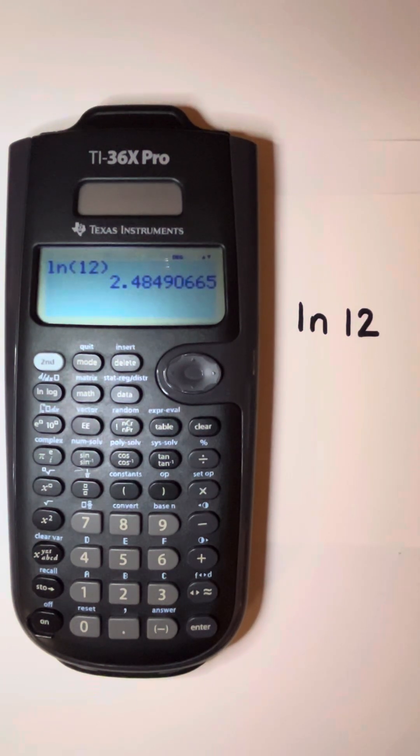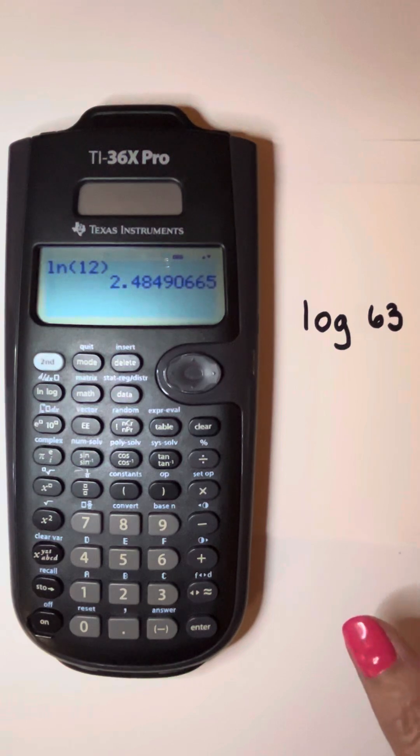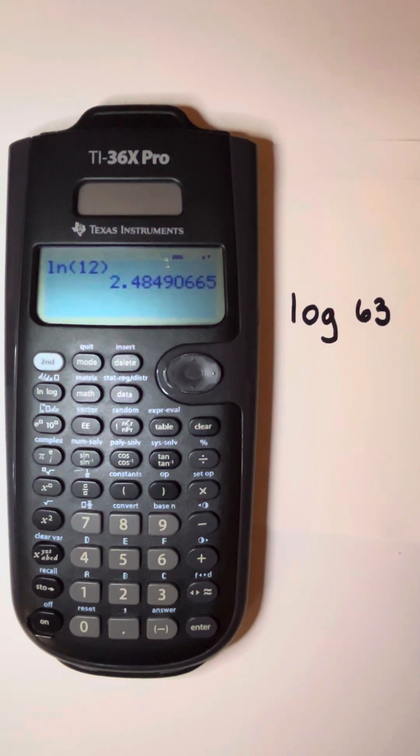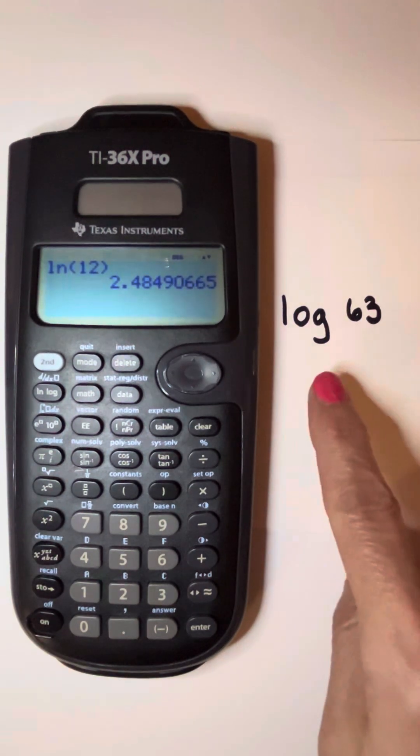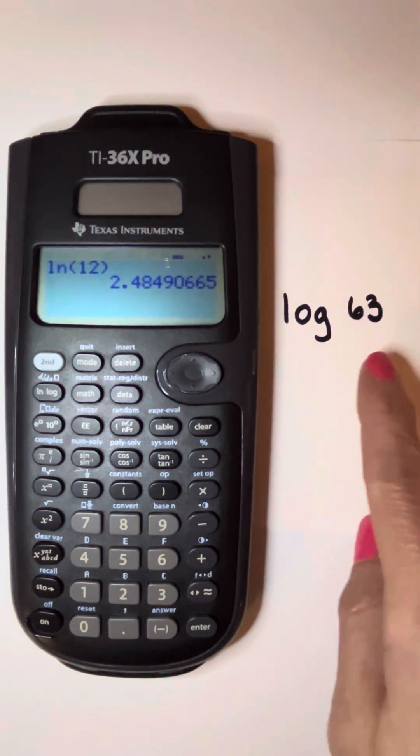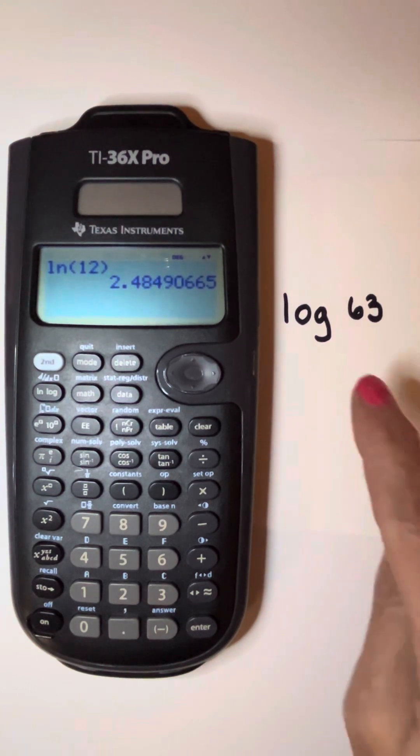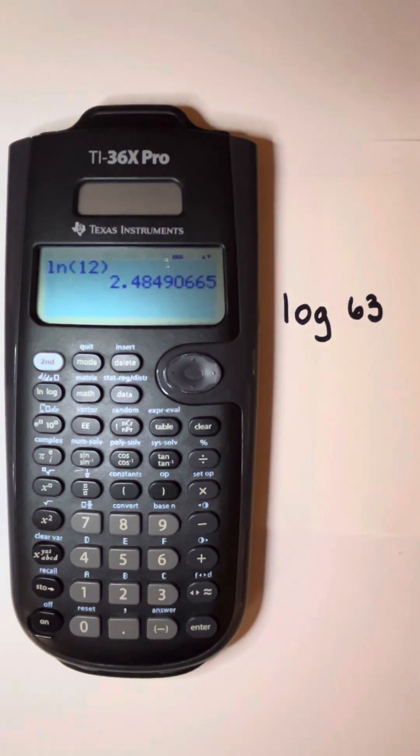Another logarithm that we can find with most scientific calculators is the common log. The common log has a base of 10, and it's an understood base, which means that it's not written. So this example has a log of 63. There's an understood base of 10. It's not written in the logarithm.